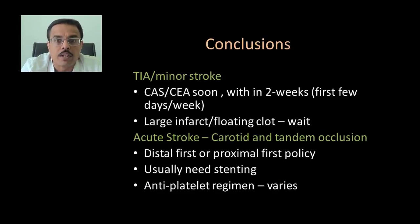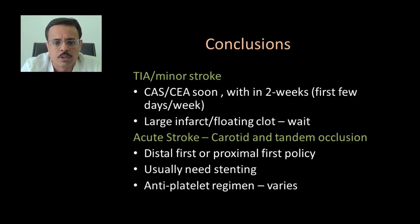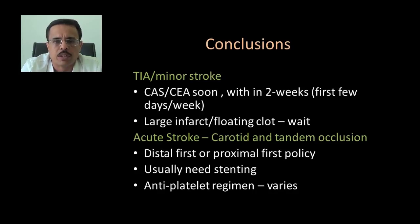In summary: in patients with TIA and minor stroke, we should perform stenting or endarterectomy very soon — within the first two weeks, and ideally within the first two days. If there is a large infarct or floating clot, one can wait. In acute stroke with tandem occlusion, a distal-first policy is probably better than proximal-first. Many of these patients need stenting in the acute setting, and the antiplatelet regimen varies among groups. Thank you.